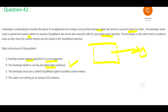Option A says that if you send custom metrics using the CLI, this is not supported — which is incorrect. You can use the CLI, the console, and AWS SDK APIs. Option C says you should use the unified CloudWatch agent to publish custom metrics — this is not necessary. You can create and publish custom metrics directly without the agent.